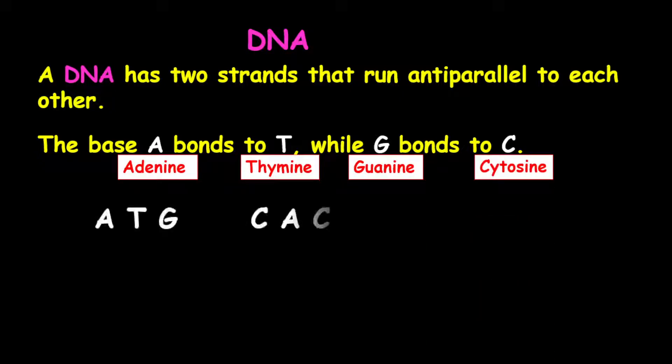Now, let's take, for example, we have a portion of a DNA strand: A, T, G, C, A, C, and G, A, A.